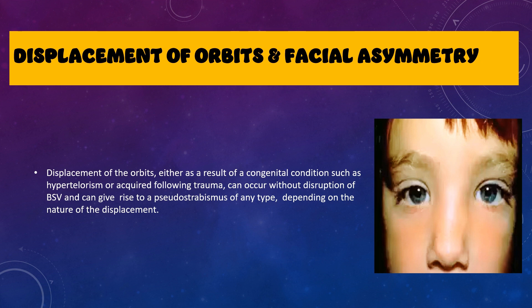Another cause of pseudo-strabismus is displacement of the orbits or facial asymmetry. The orbits might not be present straight together — there may be displacement due to a congenital condition like hypotelorism, where orbits are placed far apart, or acquired displacement due to trauma. When orbits are displaced, the eyeballs are not at the same level and it may simulate the presence of a squint. Importantly, in pseudo-strabismus there will be no disruption of binocular single vision (BSV).